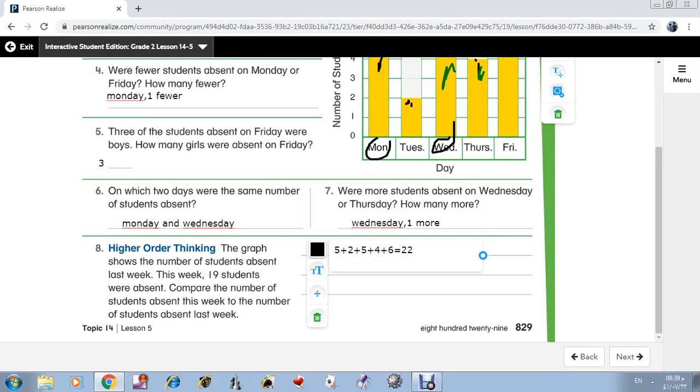So 22 is more than 19 by what? By 3 more students.